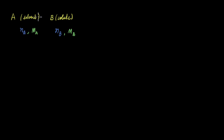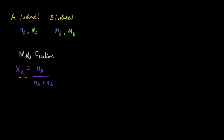Let's say we have a solvent A of molar mass MA and there are NA moles of A, and a solute B is added to the solvent to create a solution. The molar mass of B is MB and the number of moles of B is NB. With this information, we can define mole fraction, where the mole fraction of A equals NA divided by the total number of moles, that is NA plus NB.